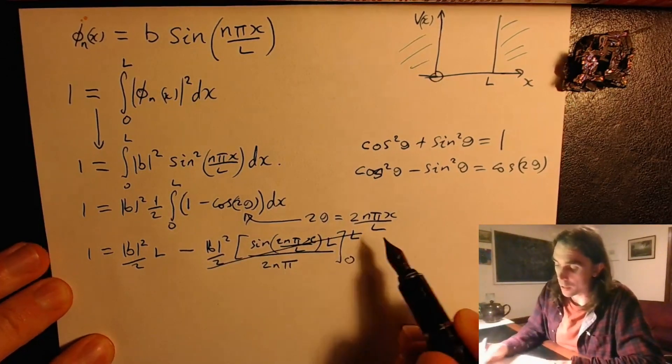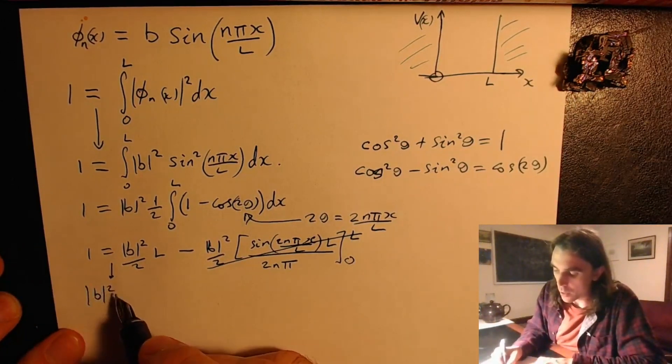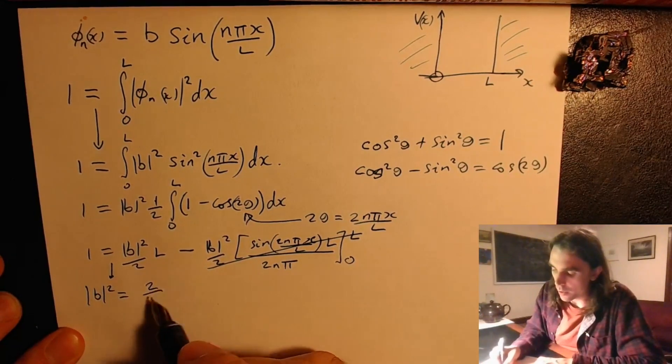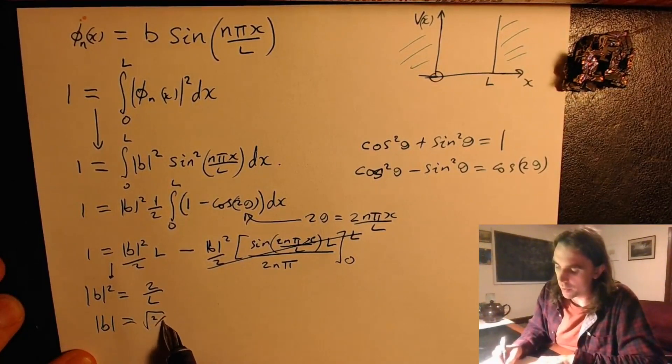So actually this thing is always equal to 0, and so we've solved and found that modulus b squared is equal to 2 over l, or modulus b equals the square root of 2 over l.